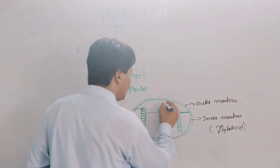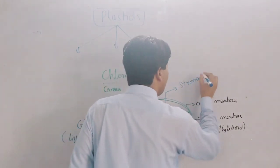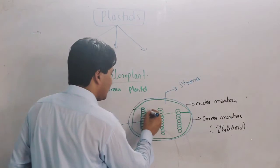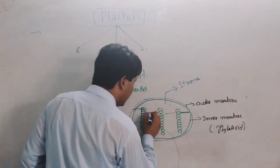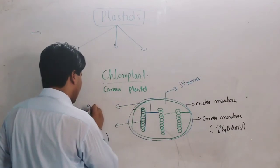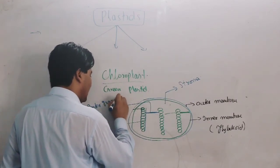The dark reaction occurs in the stroma. This part between the grana is known as stroma, and the space between individual grana is known as intergranum.